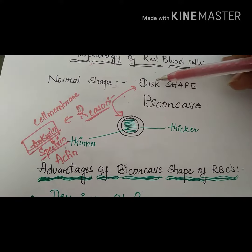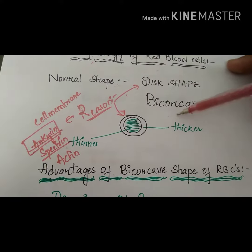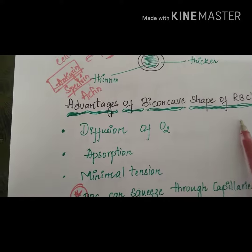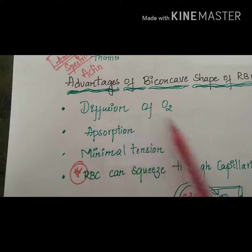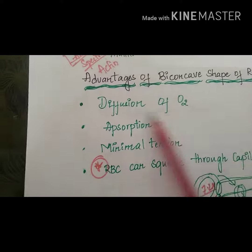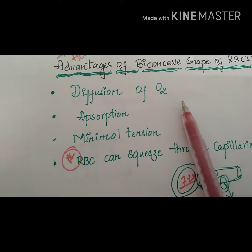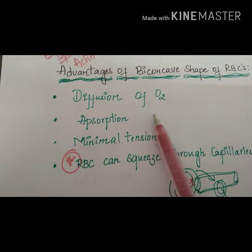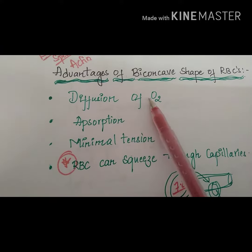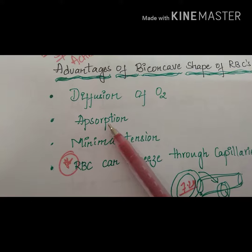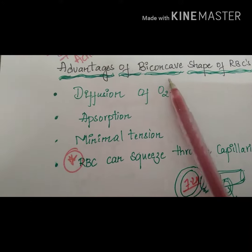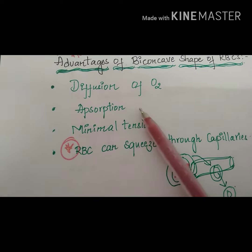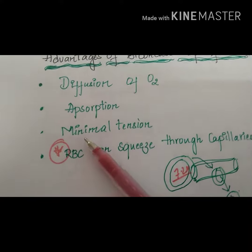The disc or biconcave shape of RBCs offers various advantages. First, oxygen and carbon dioxide molecules can easily diffuse through the surface. Second, the disc shape increases the surface area of the RBCs, so that absorption of oxygen and various nutrients is greater — more surface area allows for more absorption.